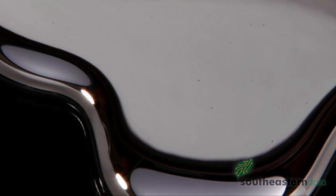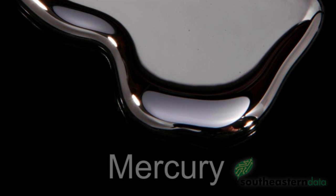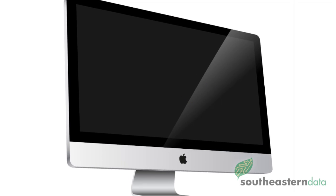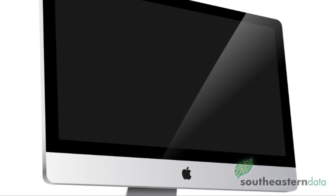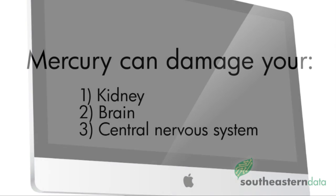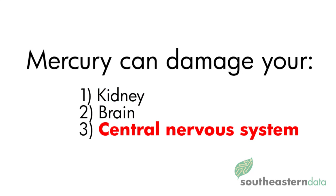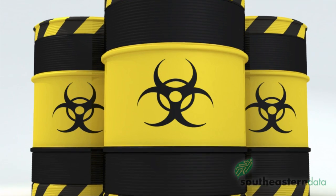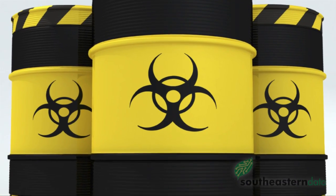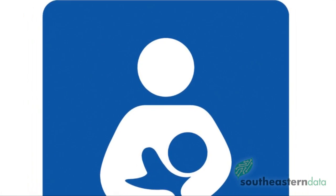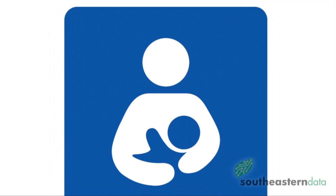Another contributor to our E-Waste problem is mercury. Mercury is commonly found within flat screen monitors and televisions. Mercury has the potential to damage our kidneys, brain, and central nervous system. Not only can mercury hurt an individual, it can cause further damage by being passed from a nursing mother to their infant child.